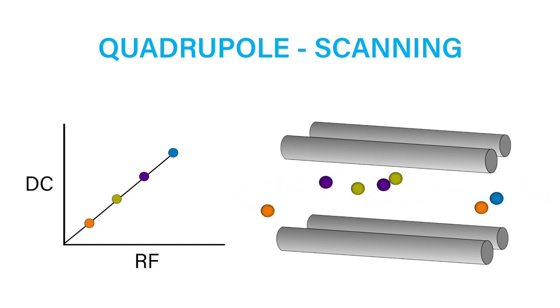The scan time is the amount of time the quadrupole spends scanning the entire mass range, from the start mass to the end mass.